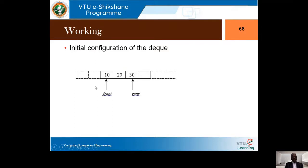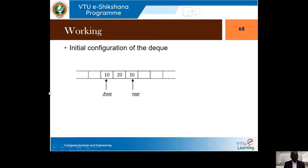Suppose the front pointer is at the 0th location. Decrementing it would give minus one, which is unacceptable since arrays in C start from zero. Hence we make front point to max minus one — the last location — so the queue works in a circular fashion.